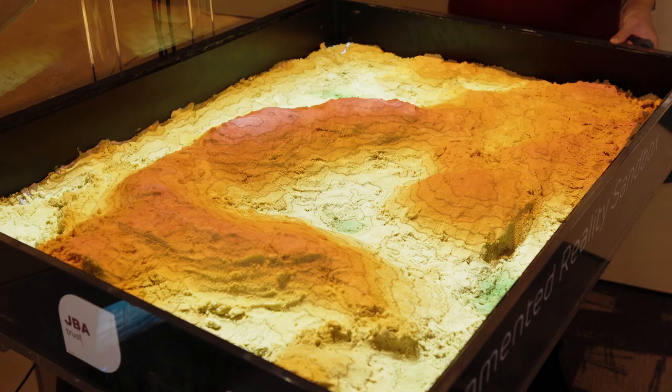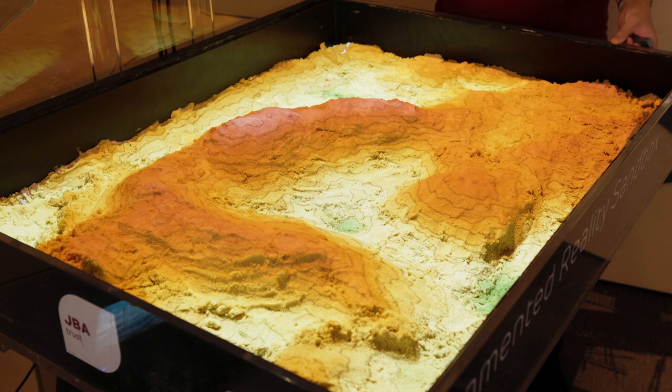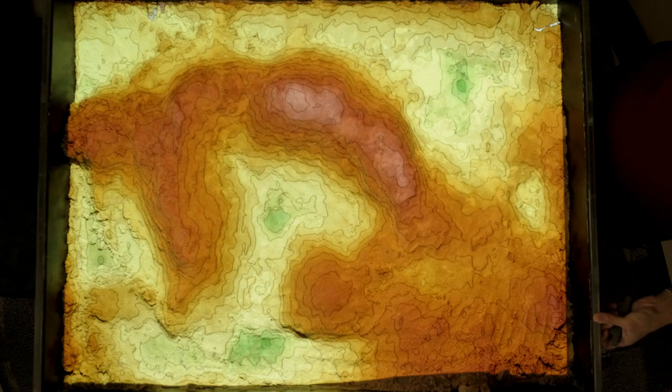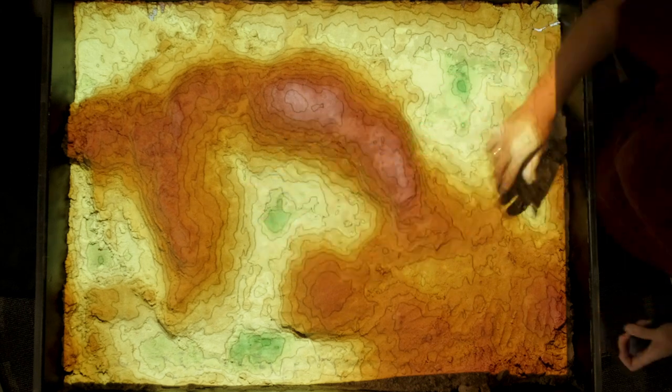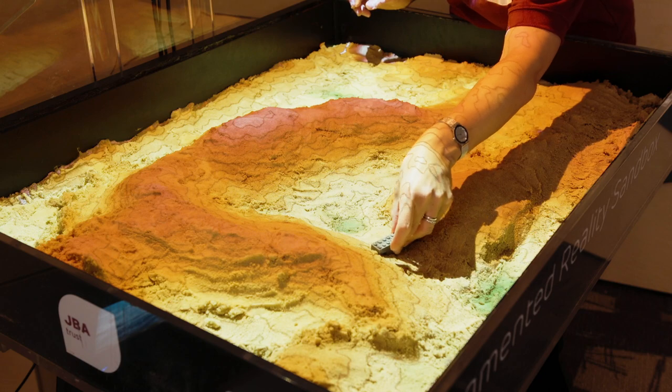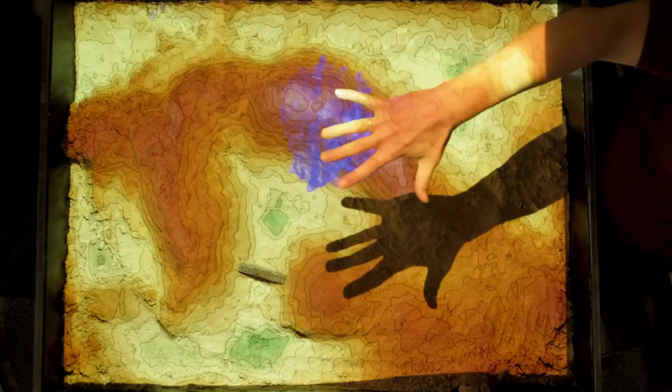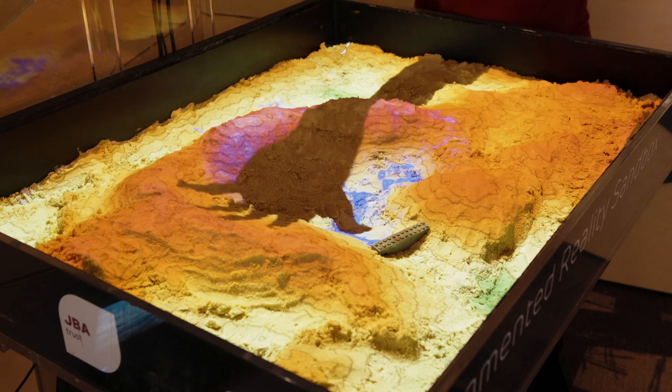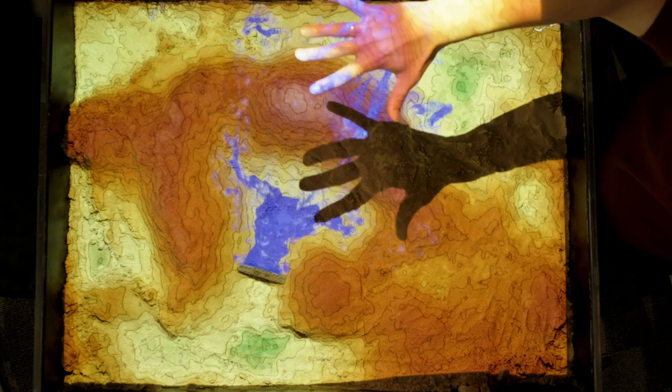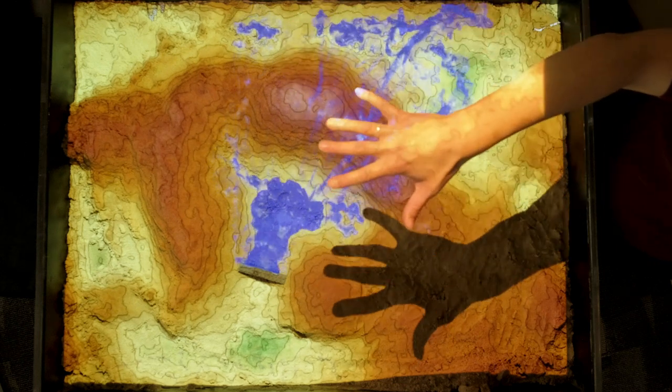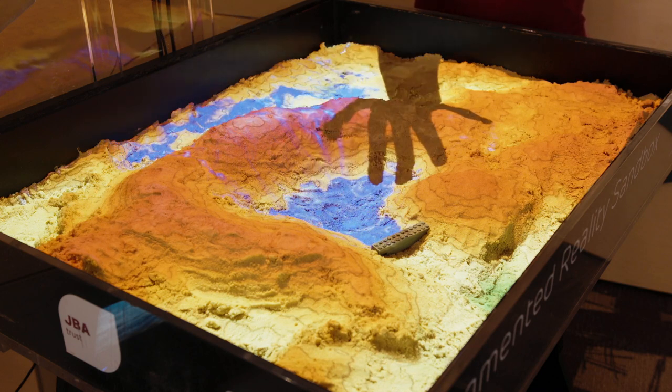In the sandbox we can also explore where storage areas for water might exist in the catchment. For example we could create a storage area in this part here, introduce a small dam, and then if we rain over this bit you can see how the water collects at the lowest point of the catchment and is stopped by the dam. We can just fill up this area of storage.